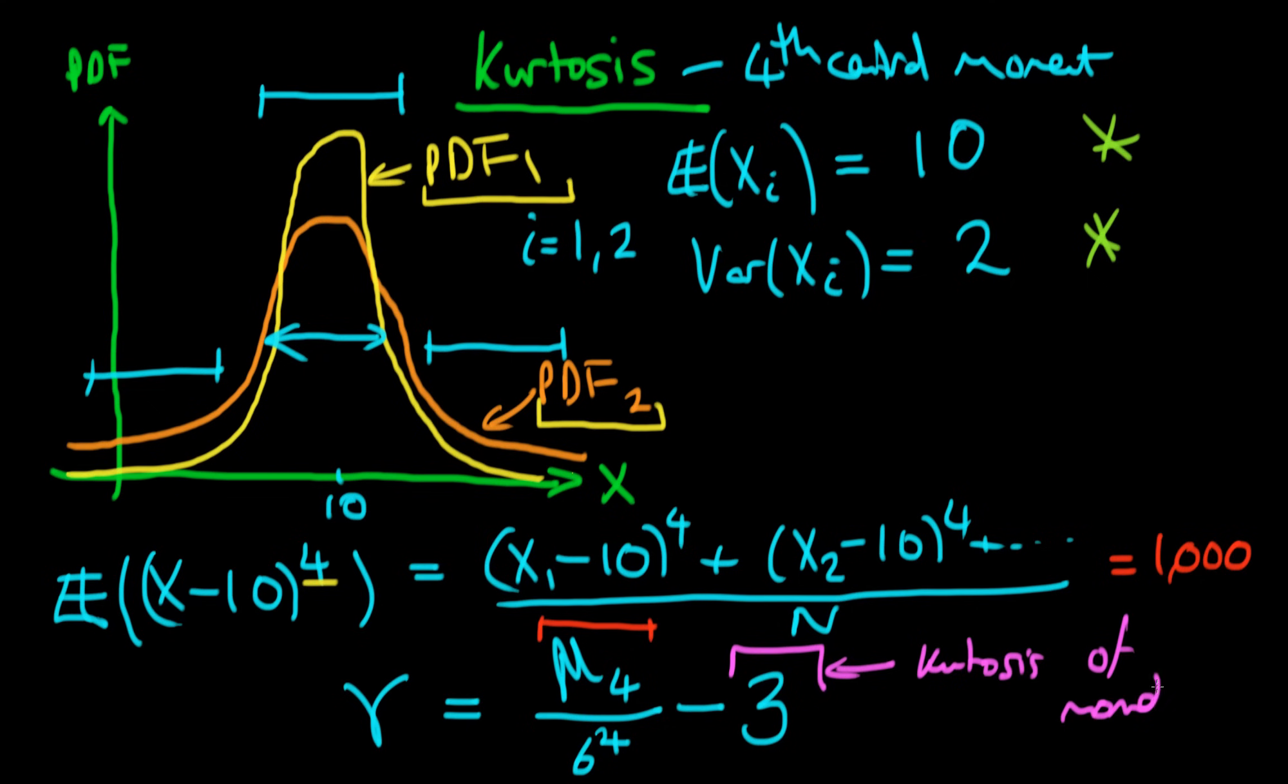And this sort of measure gamma here is sometimes called kurtosis, it's sometimes called excess kurtosis, because it essentially tells us whether our variable has fatter tails relative to the normal distribution. If gamma is greater than zero, then it has fatter tails. If it's less than zero, then it essentially has thinner tails than a normal distribution.